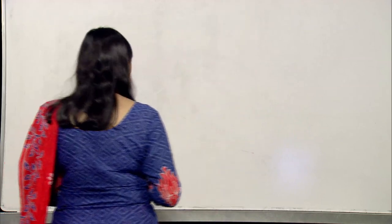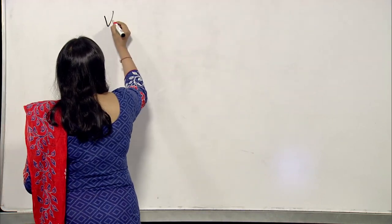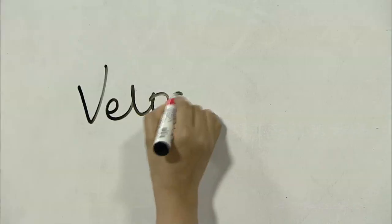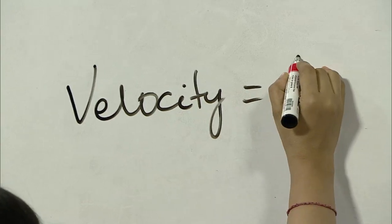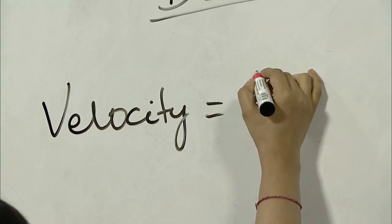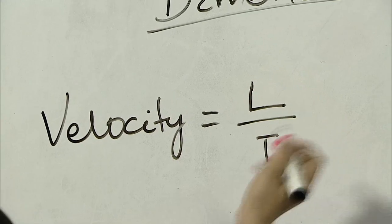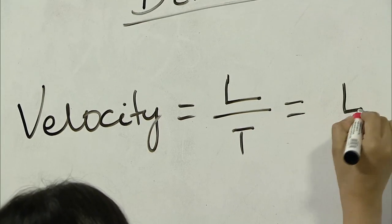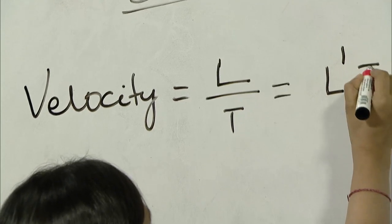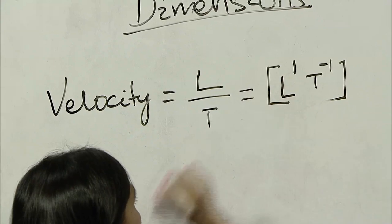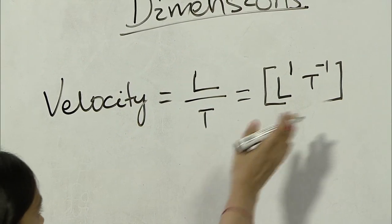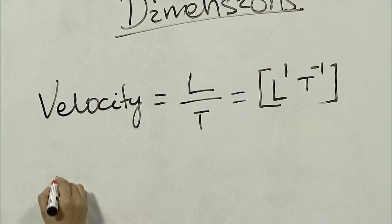So how will we express in terms of dimensions? Velocity is displacement by time, so we write L divided by T. If we represent this in terms of dimension, we will write L to the power 1, T to the power minus 1. We have a dimension in a square bracket. So this is the dimension of velocity.